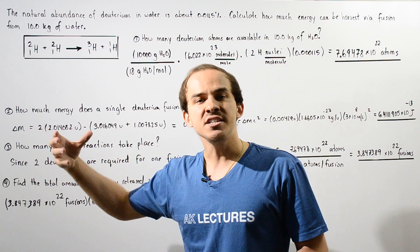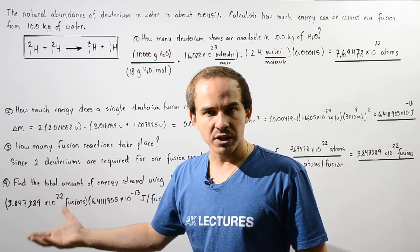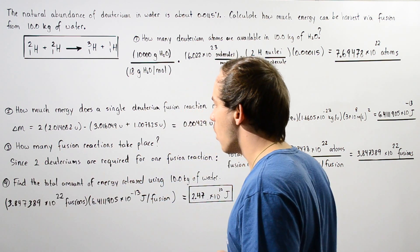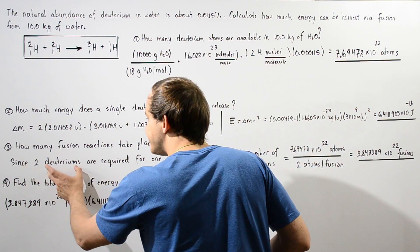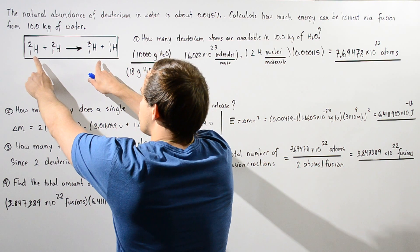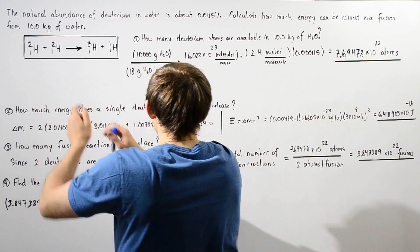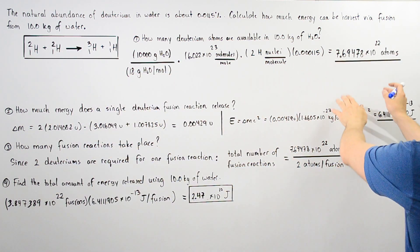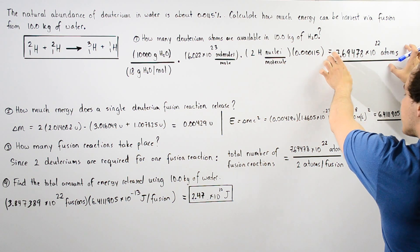The question is how many such reactions actually take place in the 10 kilograms of water. So since two deuteriums are required for one fusion reaction, that means we take the number of total atoms, divide that by two, and that gives us this many fusion reactions.